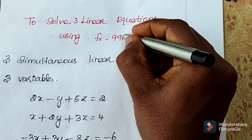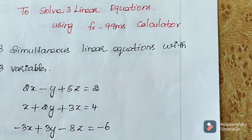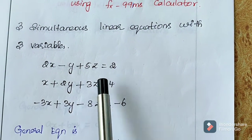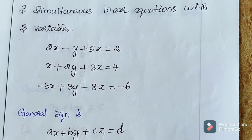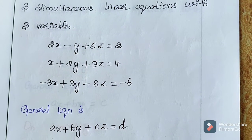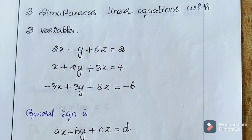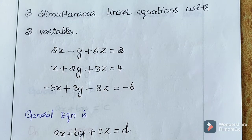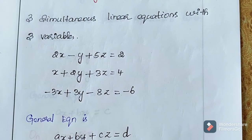I am going to consider 3 equations. The equations are 2X minus Y plus 5Z equals 2, X plus 2Y plus 3Z equals 4, and minus 3X plus 3Y minus 8Z equals minus 6.